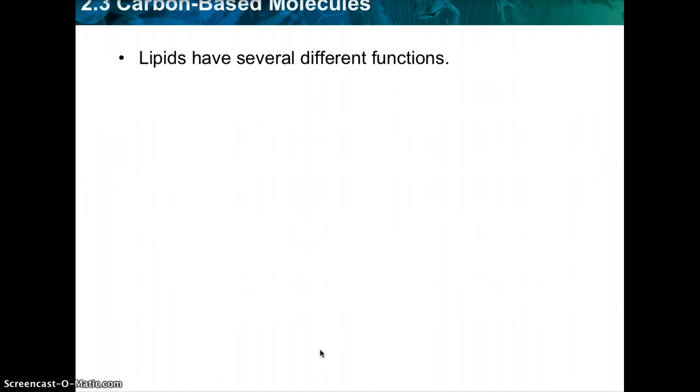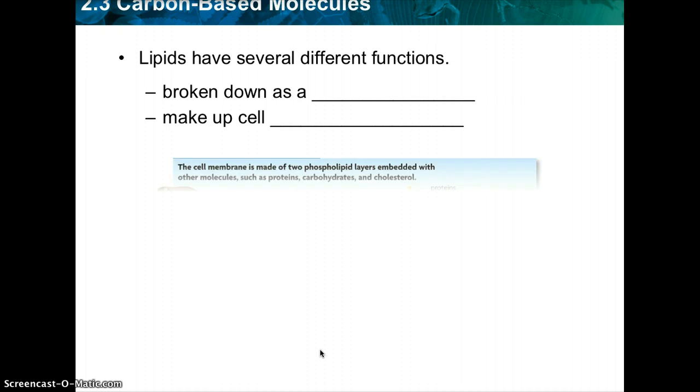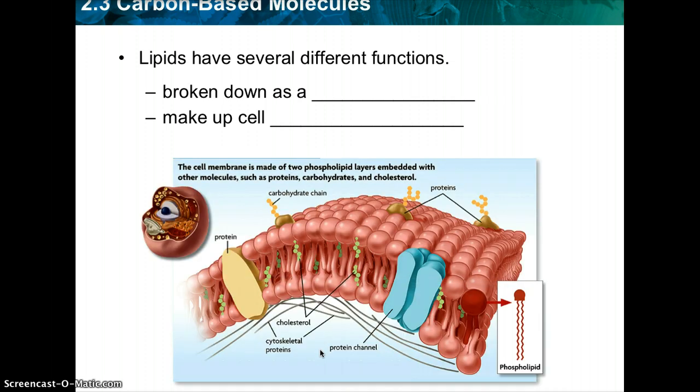Lipids have several different functions. Make sure you know these functions. One, lipids can be broken down as a source of energy. They make up the cell membrane. And they can be used to make hormones. That's the third one. It didn't pop up on here for some reason. But know that the third function would be used to make hormones. And here's a picture of our lipid bilayer.